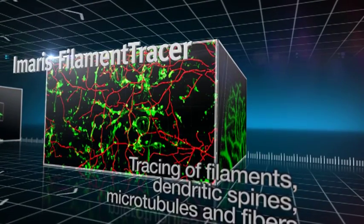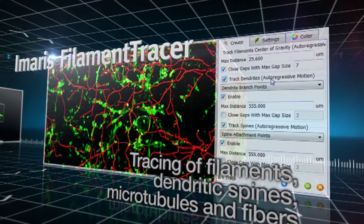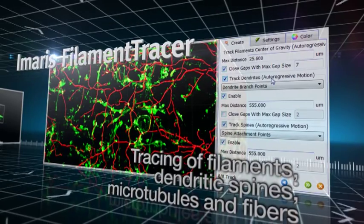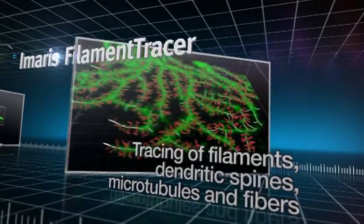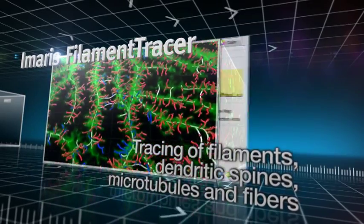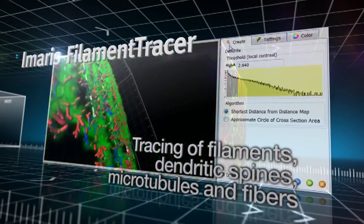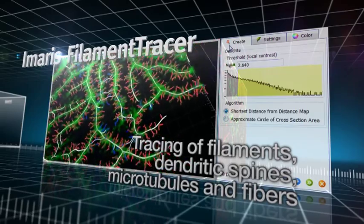A key module of Imaris, Filament Tracer, is the most advanced software solution for the automatic detection of filamentous structures in 2, 3 and 4D. With Filament Tracer, you can visualize and measure blood vessels, neurons, dendritic trees, spines and microtubules.